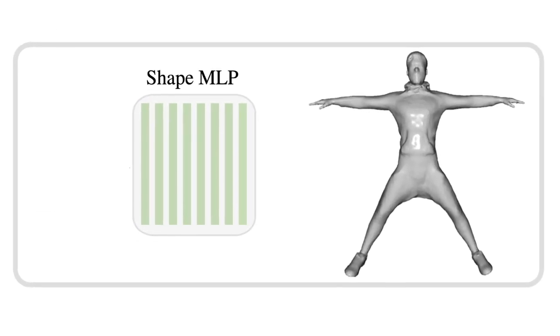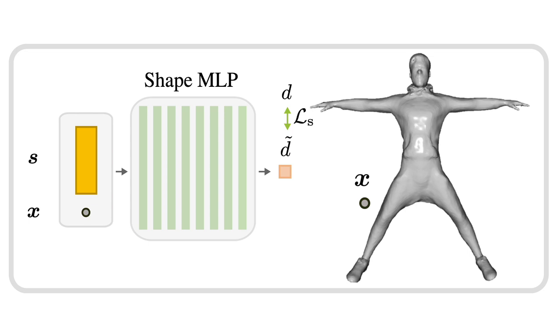The latent shape space, implemented as an autodecoder conditional on a shape code S, learns to implicitly represent different identities in their canonical pose by mapping a query point X to its SDF value.